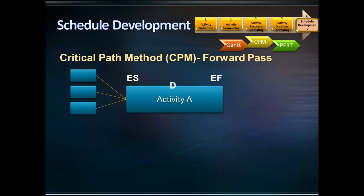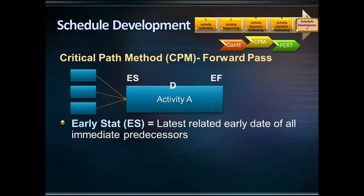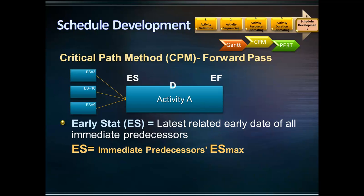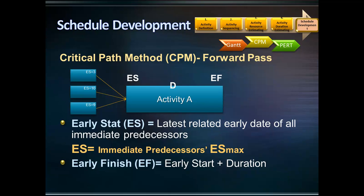As seen in the forward pass, the early start of an activity is the latest related early date of all its immediate predecessors — in other words, the maximum early start of its predecessors. For instance, if the early start of activity A's predecessors are 3, 10, and 9 days, the early start of activity A will be 10 days. The early finish of an activity is its early start plus the duration. This is how early start and early finish dates are calculated in the forward pass.